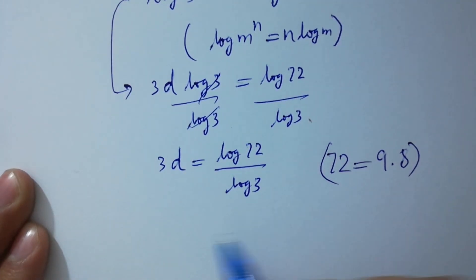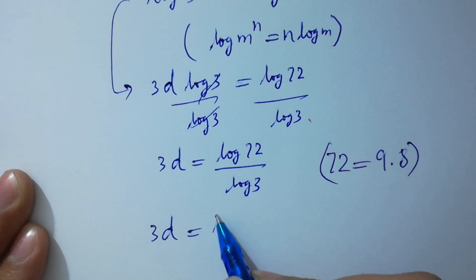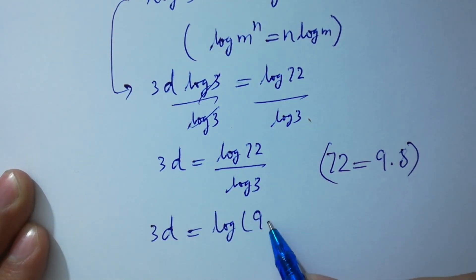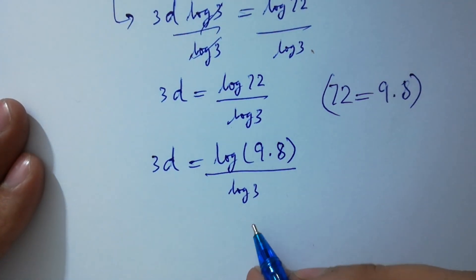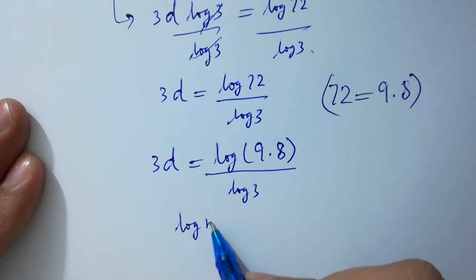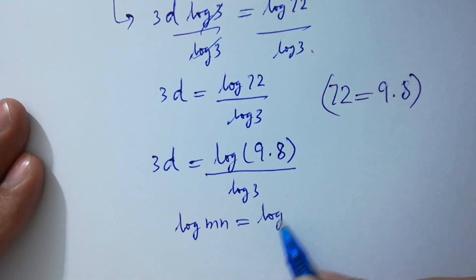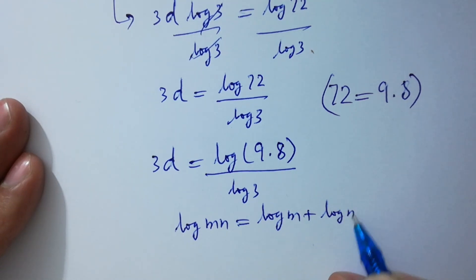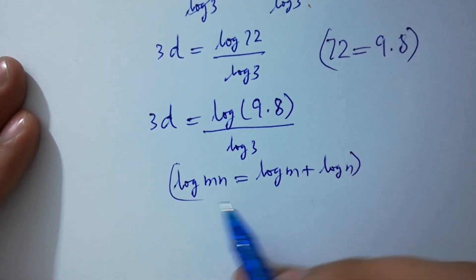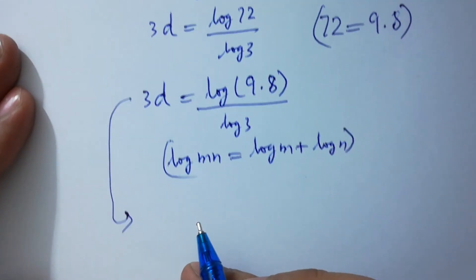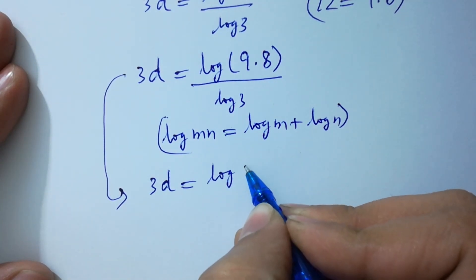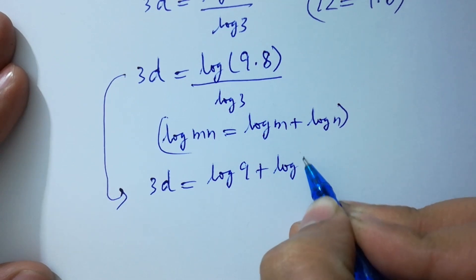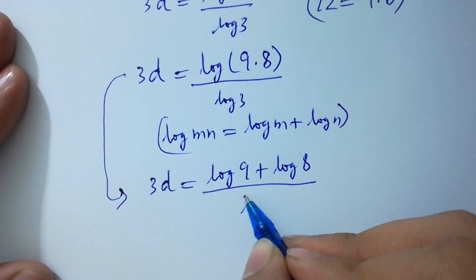so 3d equals log(9 times 8) over log 3. Since log(m·n) equals log m plus log n, it will be 3d equals log 9 plus log 8, all over log 3.